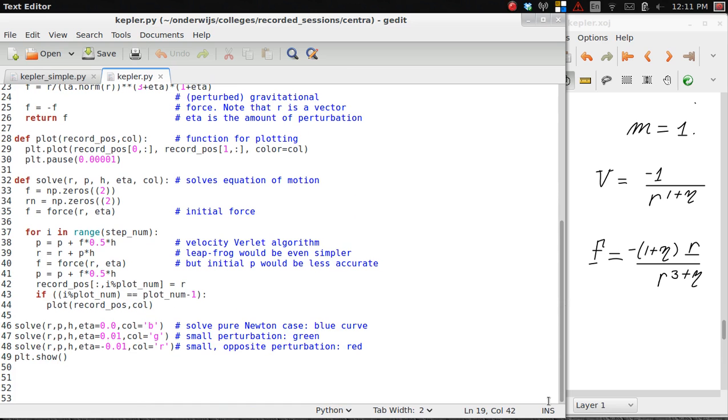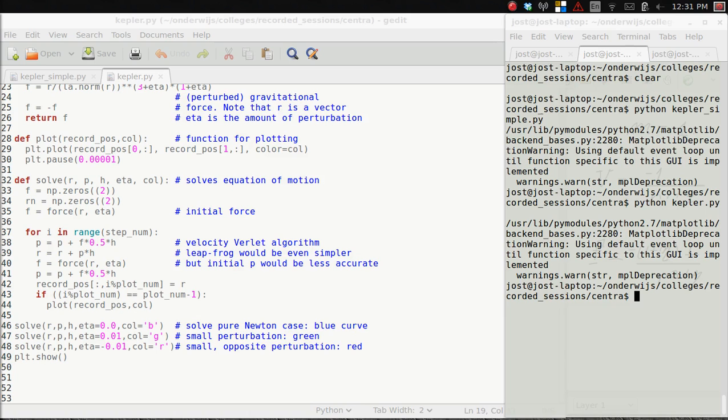I will take the eta first 0, so then we get the previous case where we have a pure Kepler orbit, and that's drawn in blue. Then we will see the orbit for eta equal to 0.01, and then I will take eta minus 0.01, and the last two will be respectively a green and a red curve. Okay, so let's see what we get when we start the program.